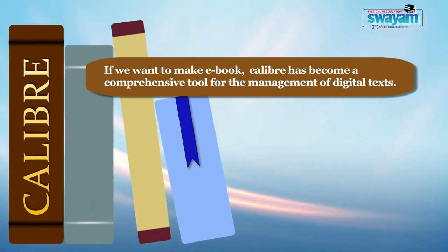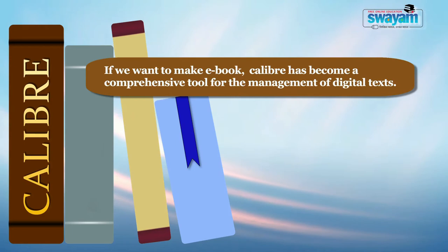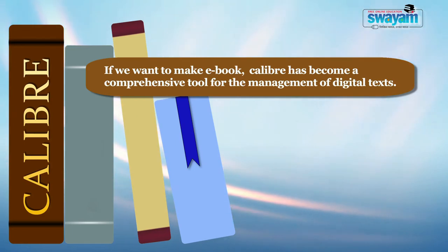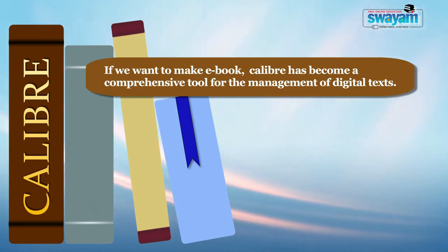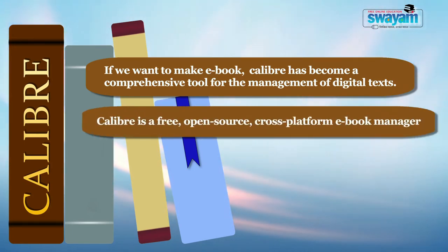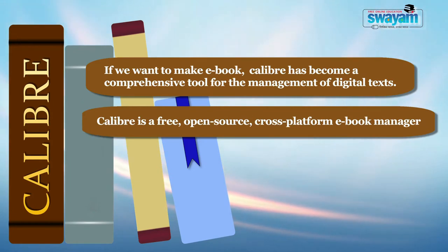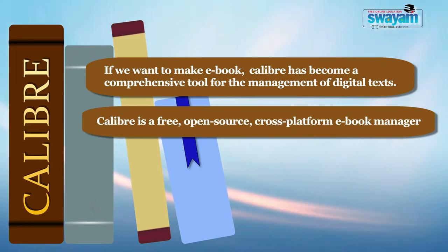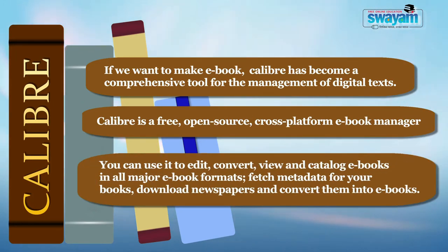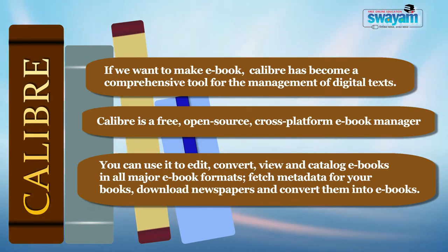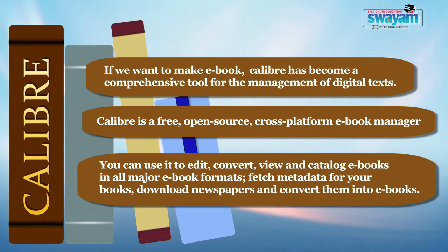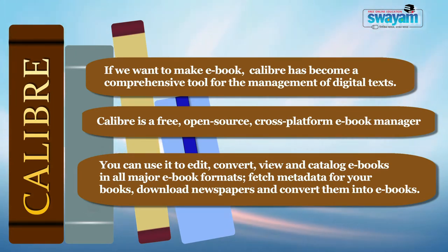If we want to make an e-book, Calibre has become a comprehensive tool for the management of digital text. It is a free and open source, cross-platform e-book manager. You can use it to edit, convert, view and catalog e-books in all major e-book formats, fetch metadata for e-books, download newspapers and convert them into e-books.